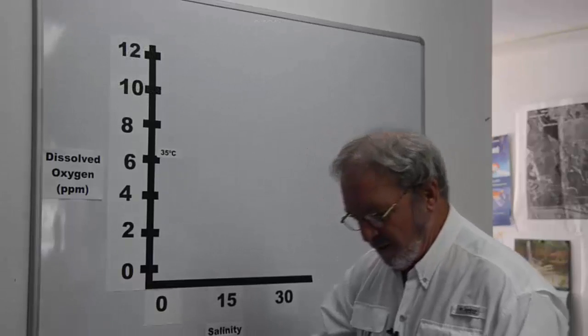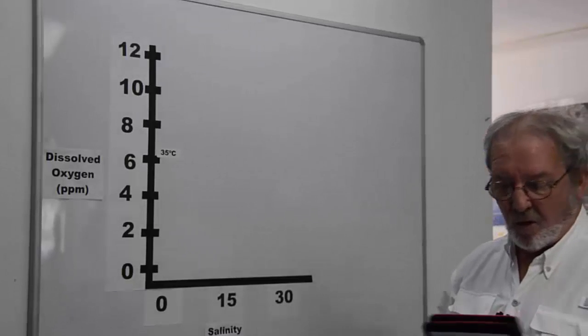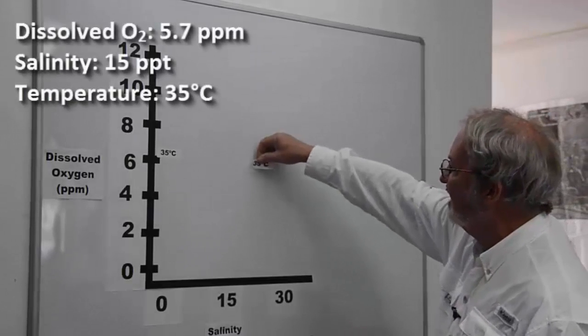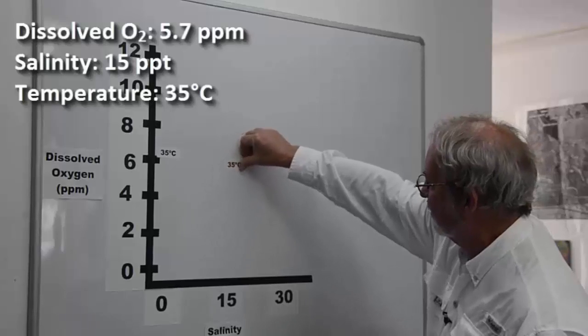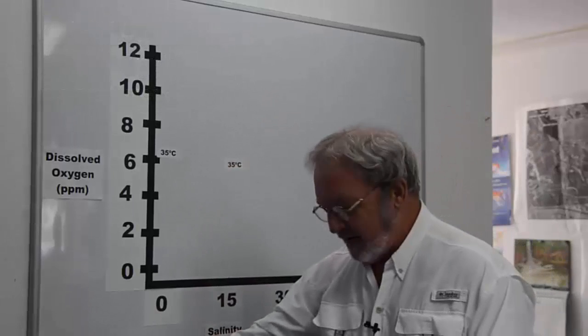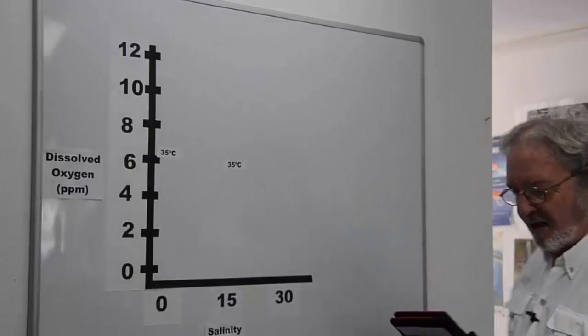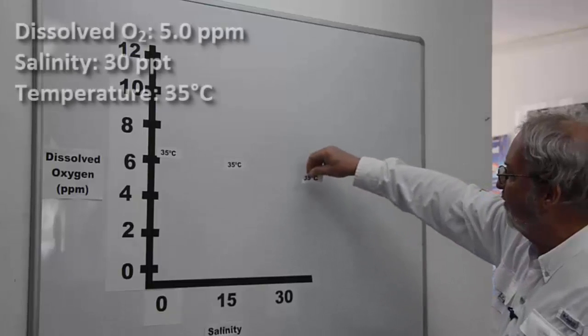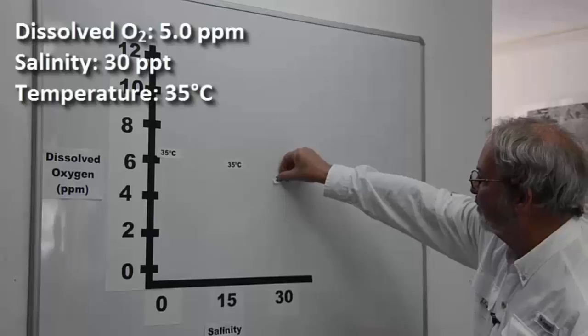Now at 15 parts per thousand again at 35 degrees centigrade, warm brackish water, we were at 5.7. And finally the warm water with sea water or 30 parts per thousand was 5.0 parts per million.